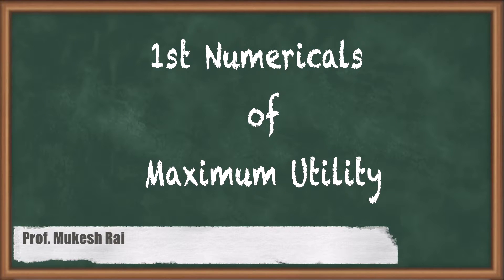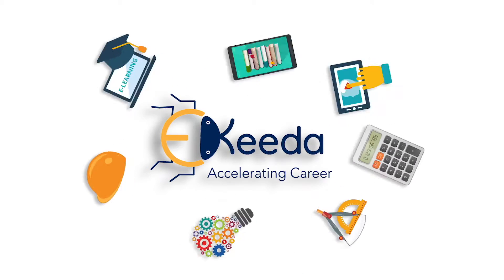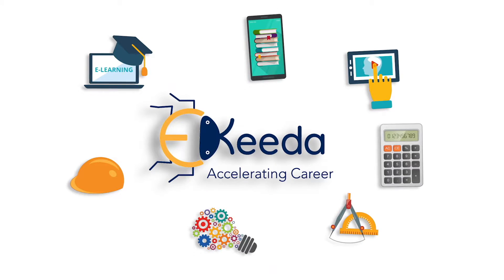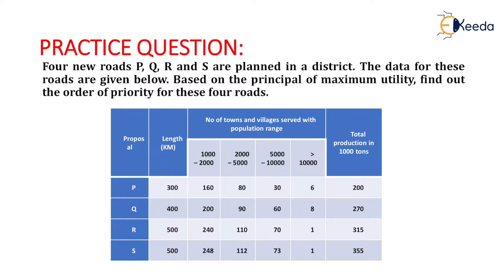Hello students, today we are going to solve the first numerical of maximum utility. The question is given as: 4 new roads P, Q, R and S are planned in a district. The data for these roads are given below. Based on the principle of maximum utility, find out the order of priority for these 4 roads.